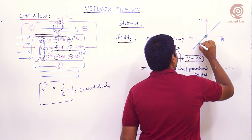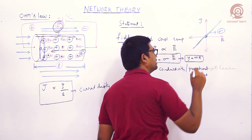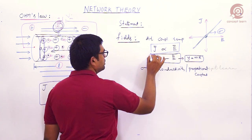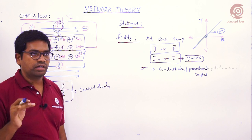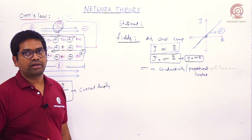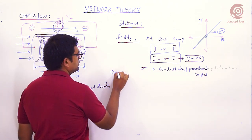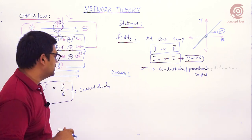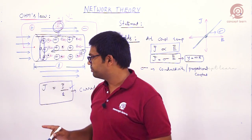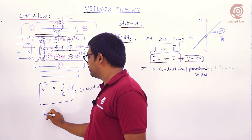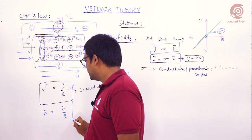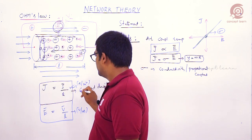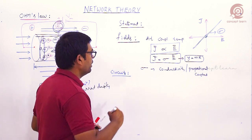The slope of the straight line passing through the origin gives the proportional constant — the conductivity σ. This is the basic statement of Ohm's Law defined in field theory. To convert it toward circuit theory, we replace current density with I/A (current per unit cross-section area) and electric field with V/L (voltage per unit length).